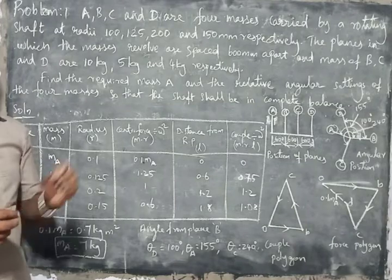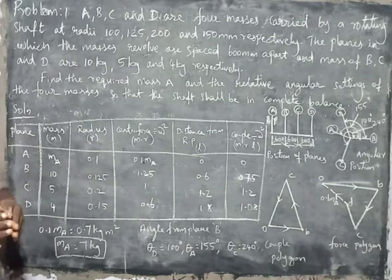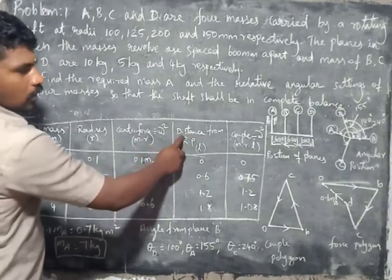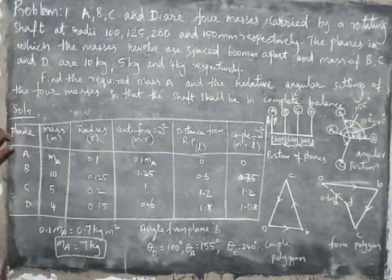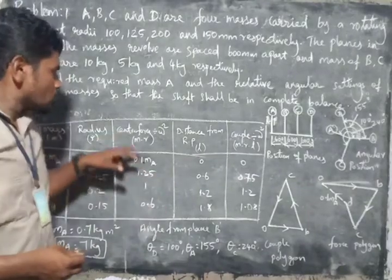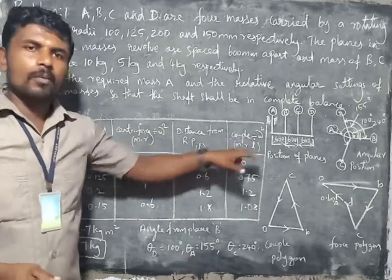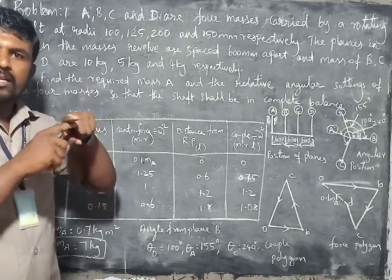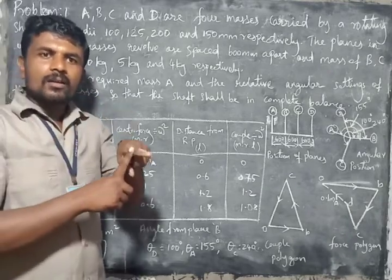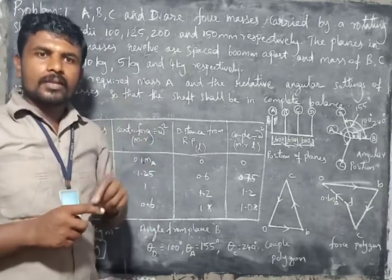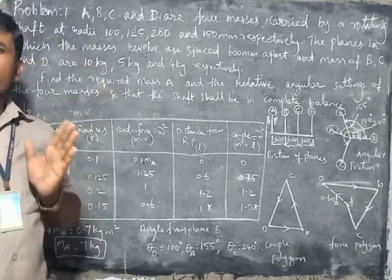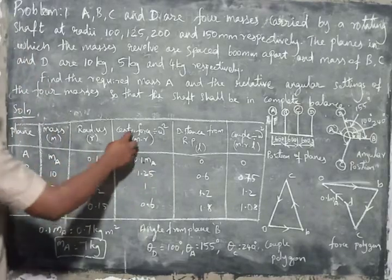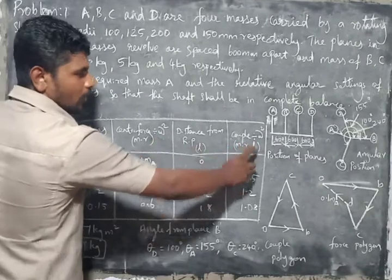We need to make this table. Wherever we need to solve a balancing of rotating mass problem, we need to put this table directly. The columns are: Plane, Mass, Radius, Centripetal force per omega square, Distance from reference plane, and Couple per omega square. We use centripetal force per omega square and couple per omega square because these planes are arranged on a single shaft rotating at constant speed — there is no speed difference between the planes.